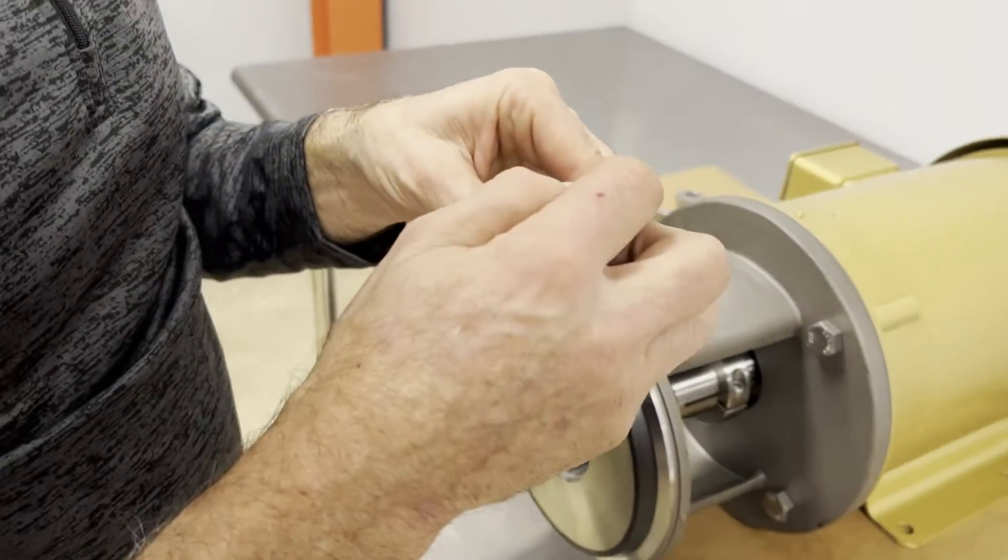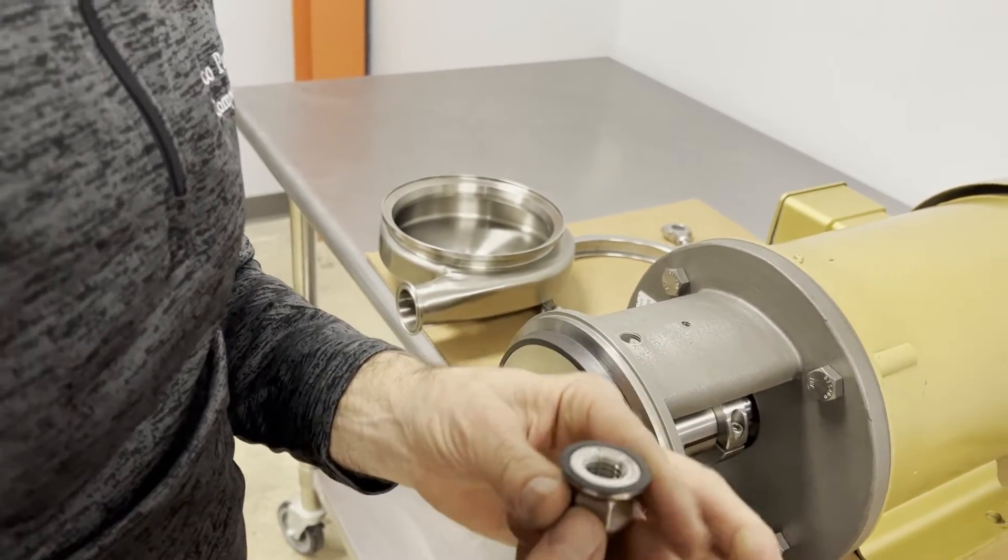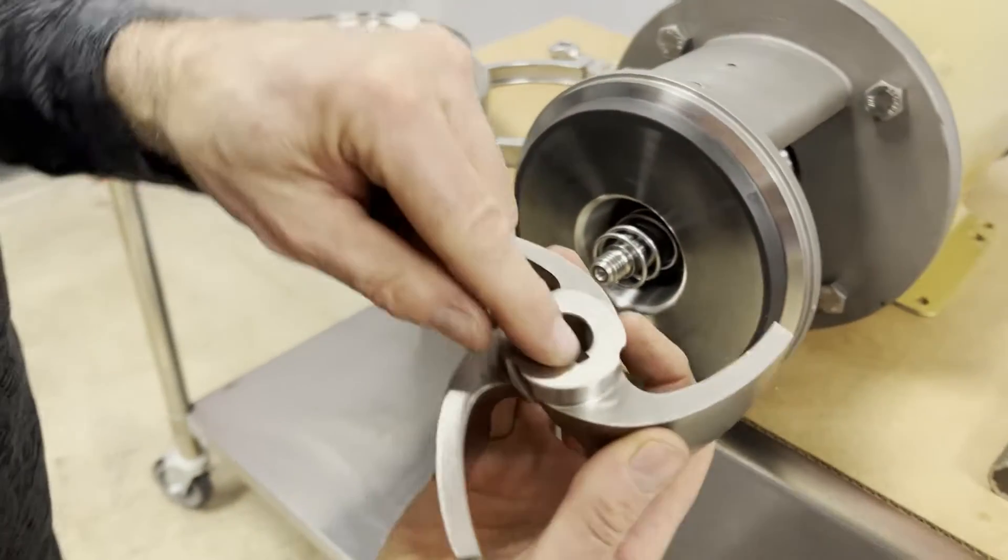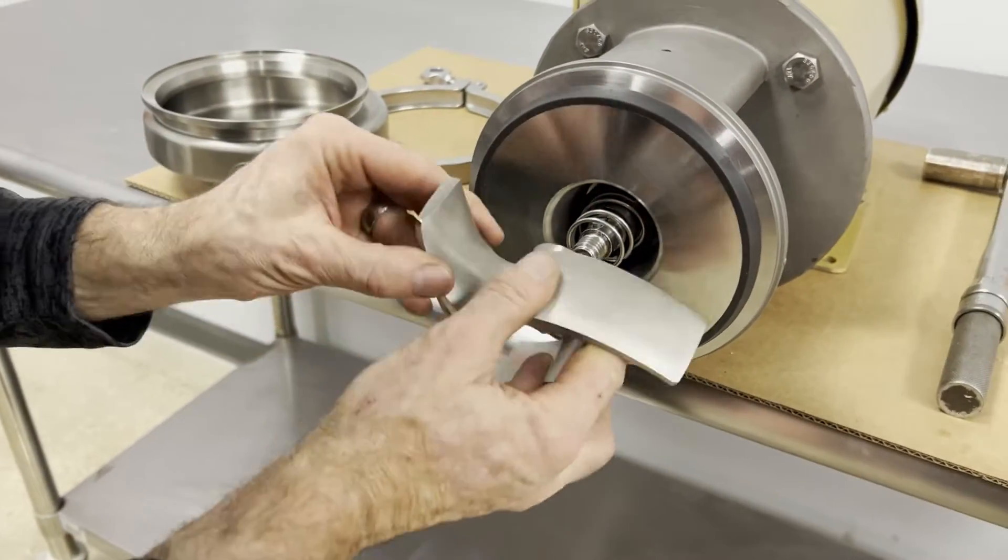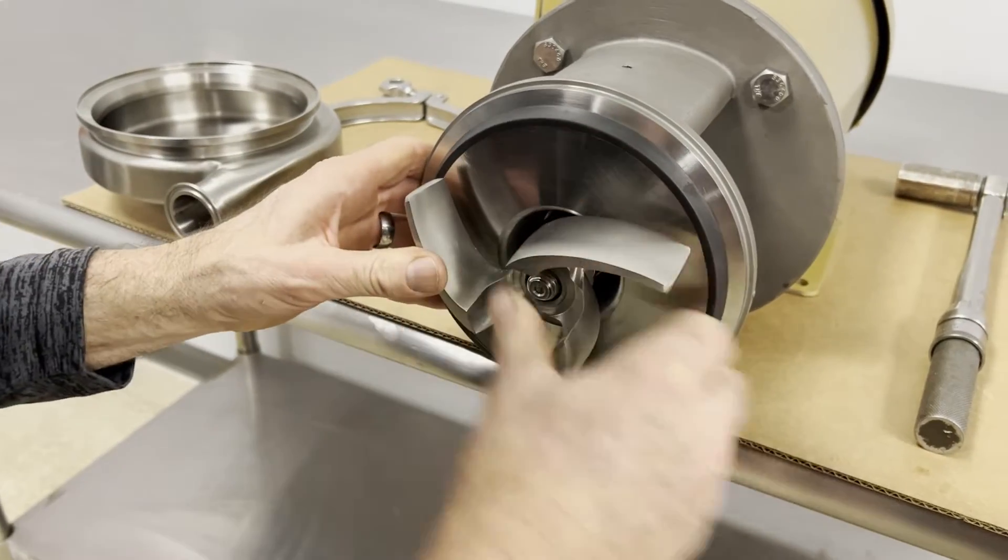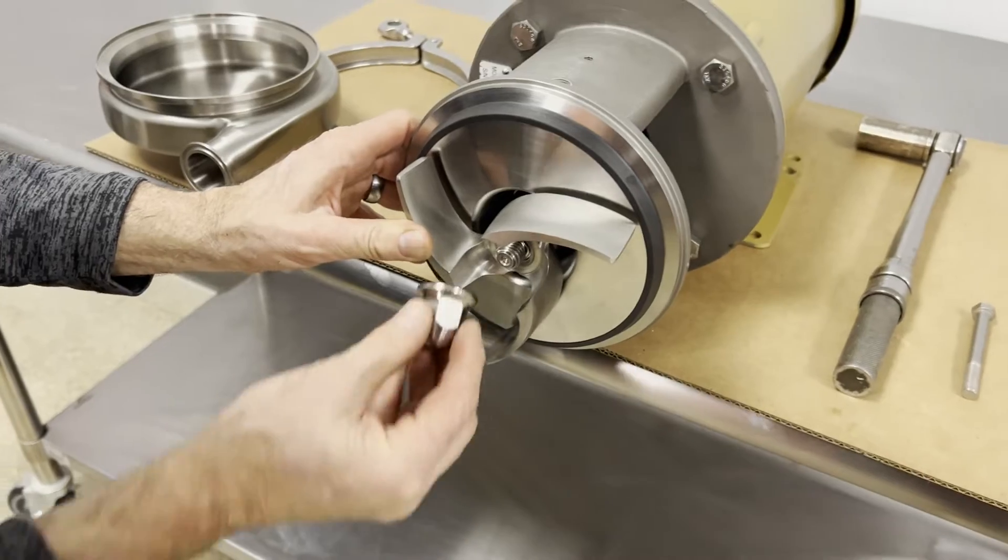The gasket, again I dab a little food grade grease just to hold that gasket in. The impeller goes on, keyway lined up with the key. Push it in and overcome that spring. Make sure your gasket is in place.